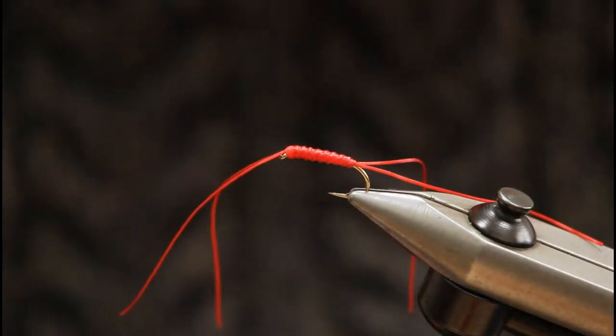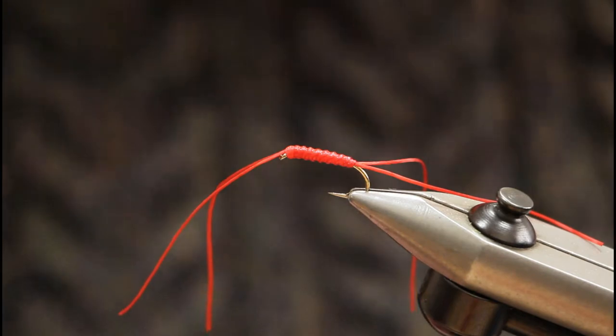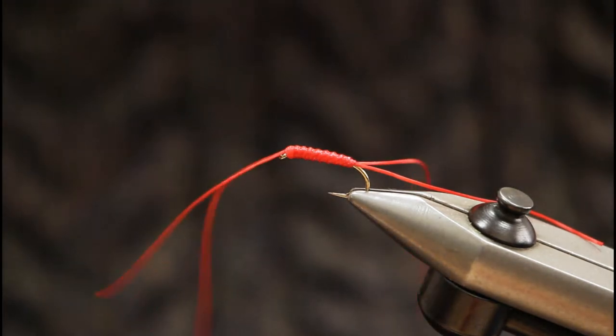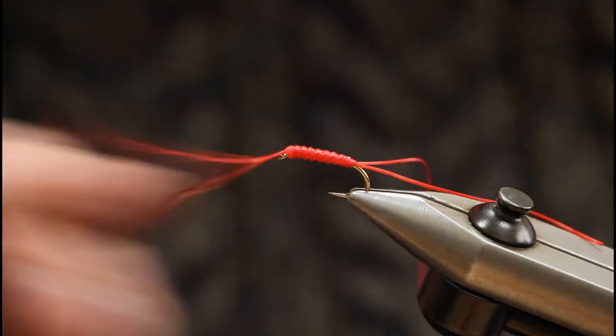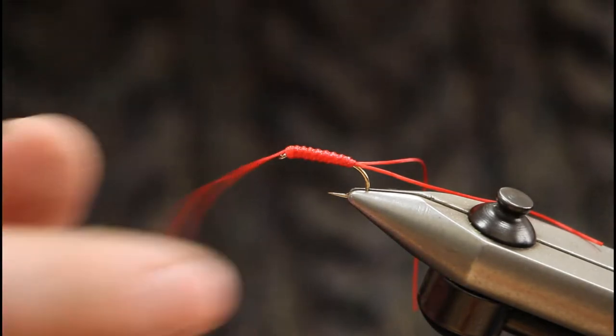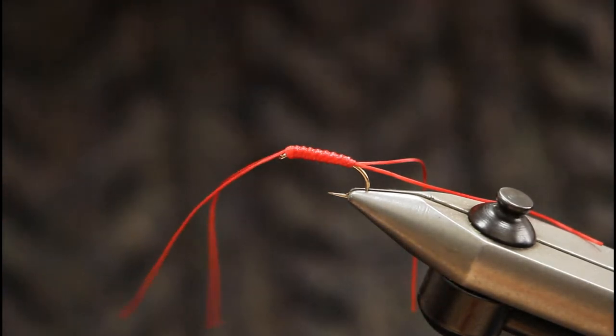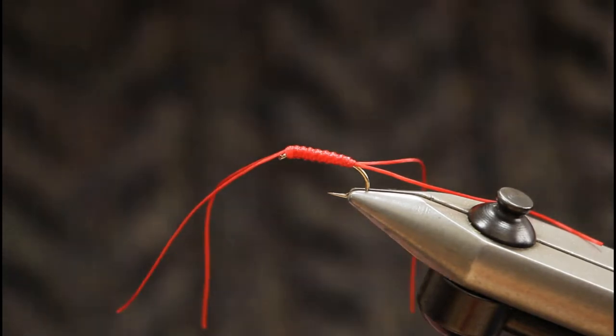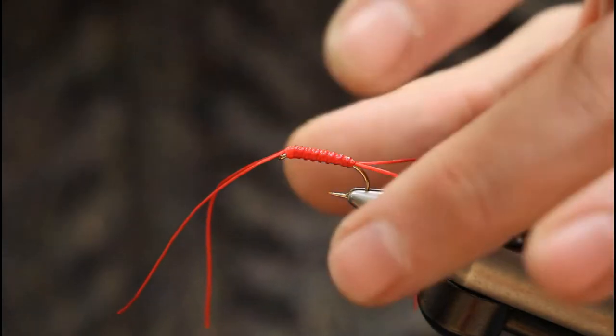How to tie the Apse Bloodworm. We're going to show you how to tie the Apse Bloodworm. This is a pattern from a guy called Peter Appleby. It's super successful, more of a lure pattern than a bloodworm pattern, but very effective on small waters, especially when the water is very clear. I'll show you how to make it in a second.